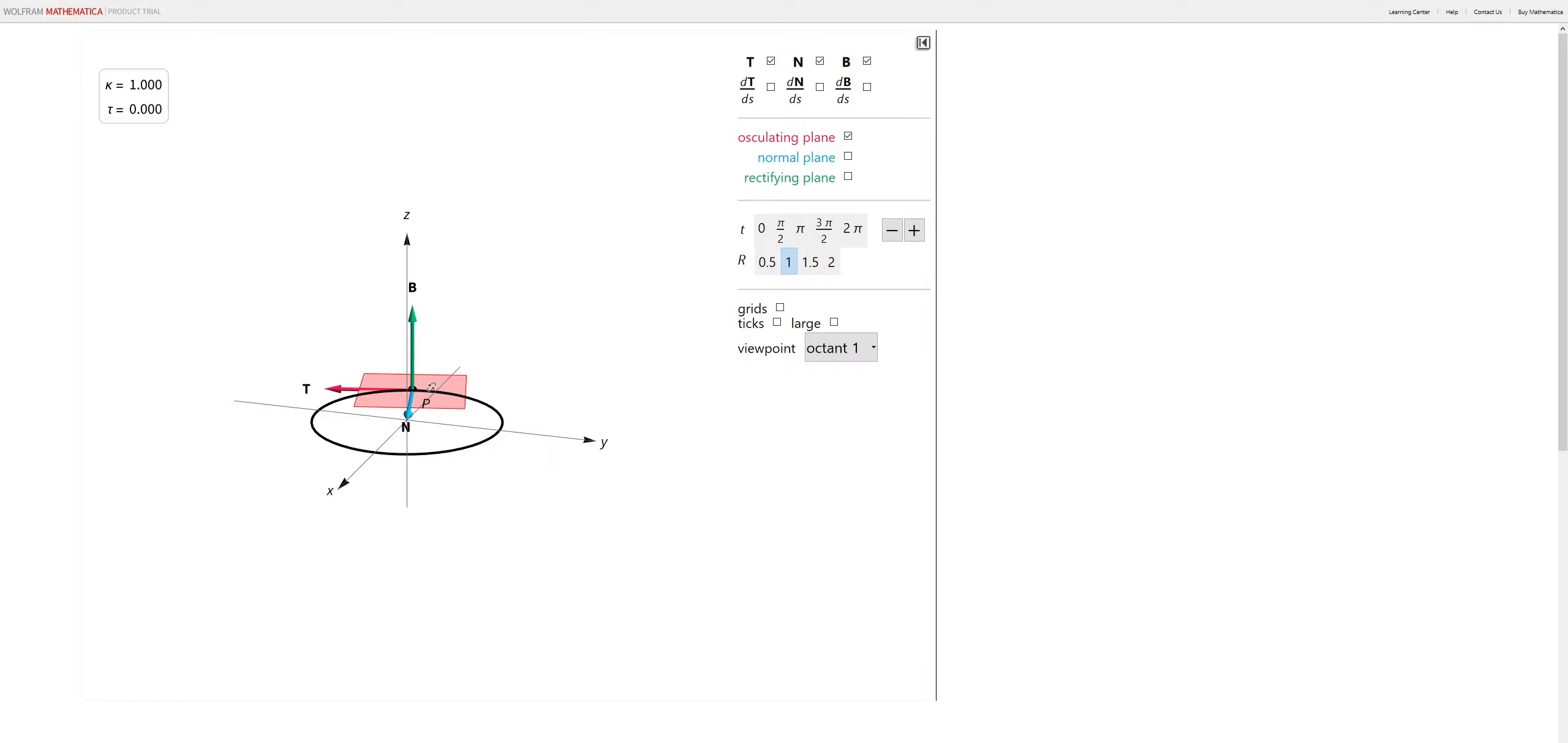So let me jump back to our circular trajectory here. So I have the osculating plane pictured. I also have n, t, and b, our unit vectors—unit tangent, unit normal, and unit binormal.